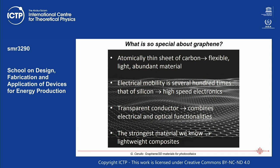What is so special about graphene? It is an atomically thin sheet of carbon — flexible, light, and abundant. It is a very good electrical conductor with electrical mobility much higher than the best semiconductors such as silicon, so it has potential for high-speed electronics.